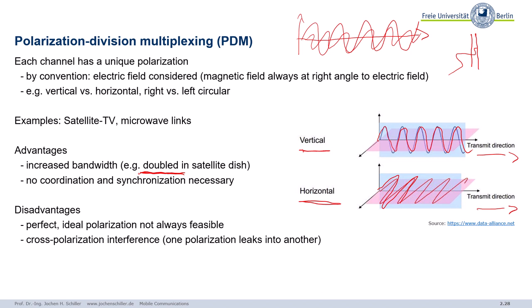The disadvantage is that ideal polarization is not always feasible with real antennas. Imperfect polarization can cause waves from one polarization plane to leak into the other, resulting in what's called cross-polarization interference. Polarization is something you also know from everyday life — polarization filters in photography, polarized lenses in glasses — all the same effect.